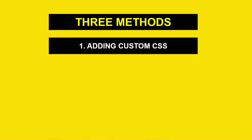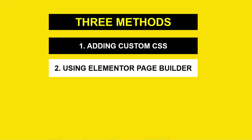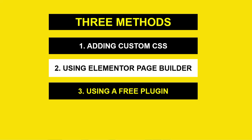The first one is adding a custom CSS code to remove the header and footer. This will completely remove the header and footer from every page of your website. The second one is to use Elementor to remove the header and footer from a specific page. The third one is to use a plugin to disable the header and footer.